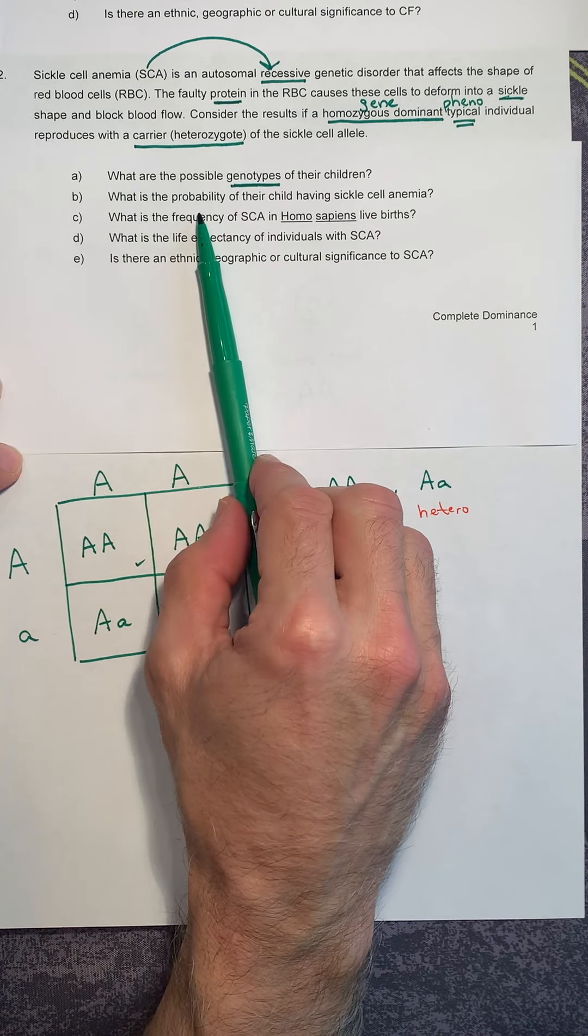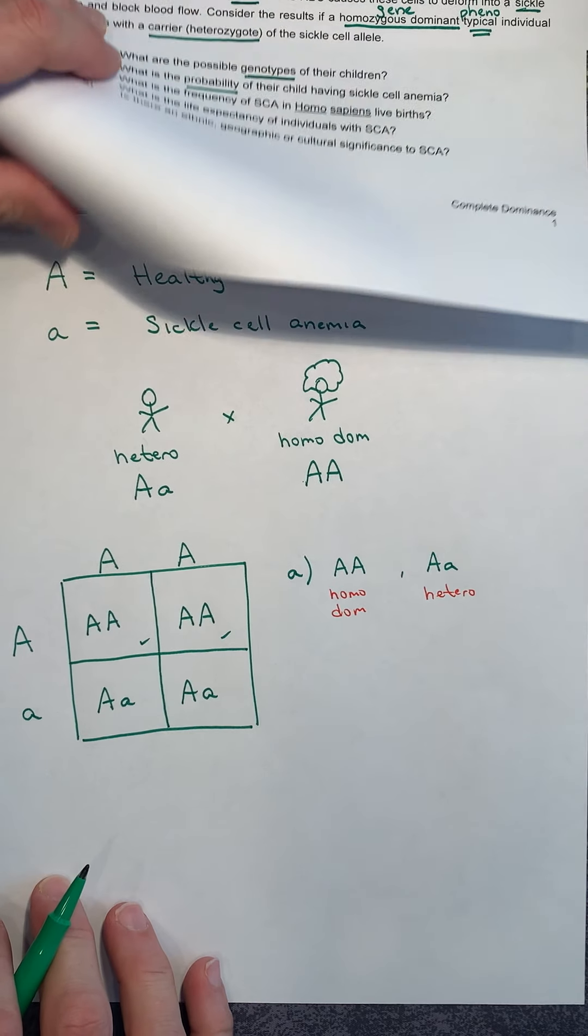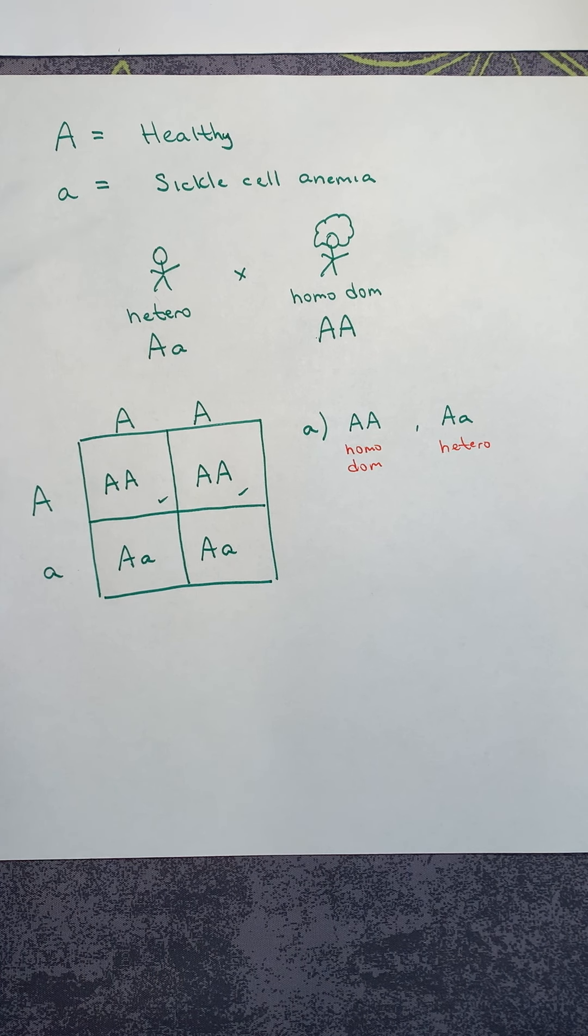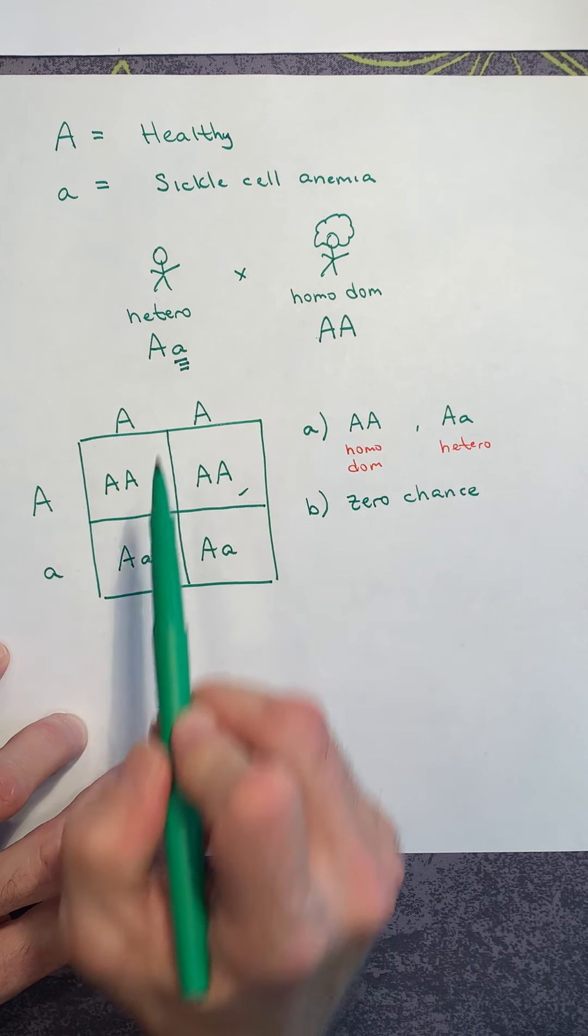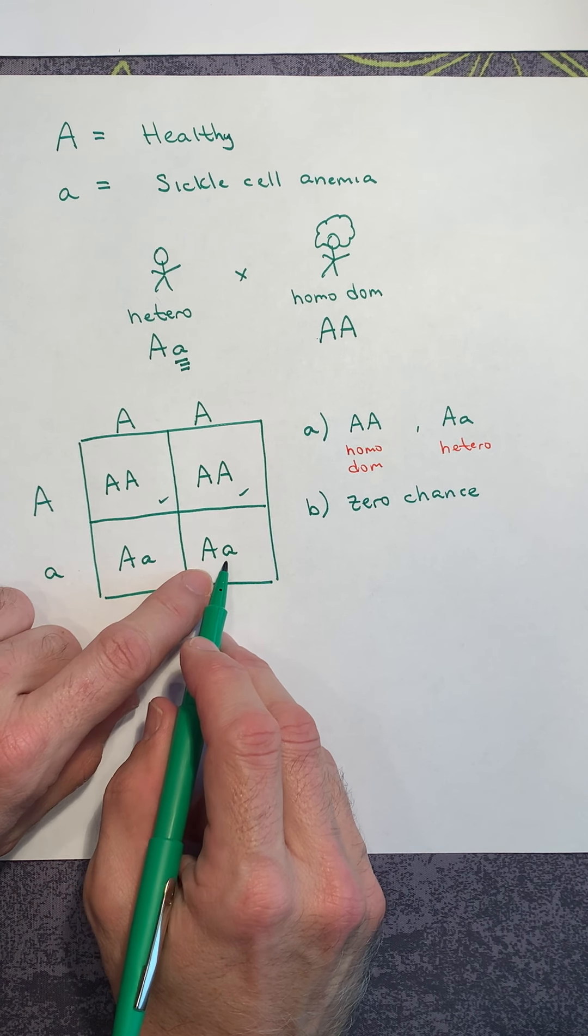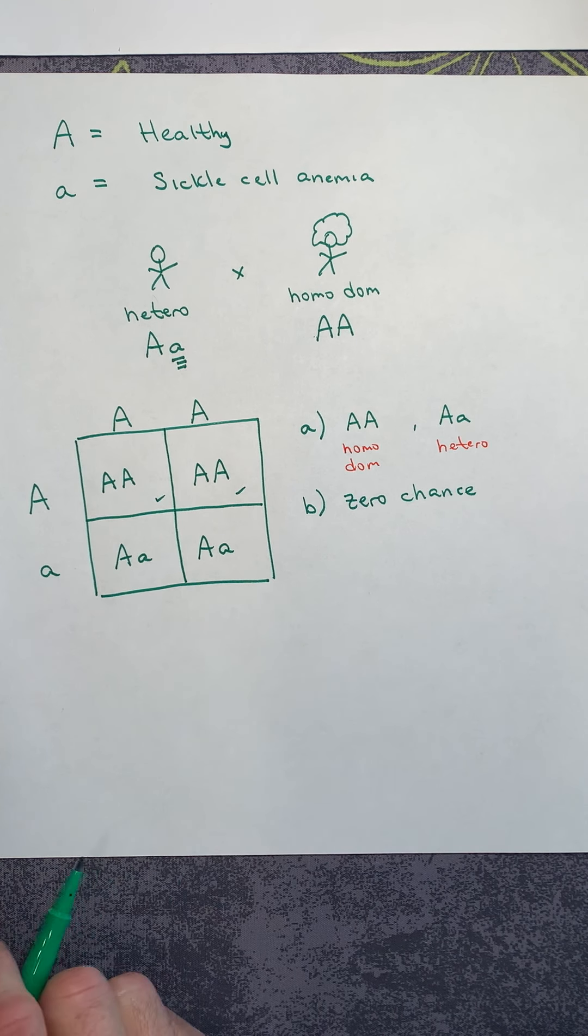Then it says B. What is the probability, what is the chance of them having a child with sickle cell anemia? Well, let's go back to our alleles here. First, in order for someone to have sickle cell anemia, they have to receive two copies of the recessive allele. Someone who is sick with sickle cell has to be little a, little a. The good news here is none of their children are little a, little a. It's physically impossible. So what is the probability of them having a child with sickle cell? Zero chance. Why? Because only he carries the sickle cell trait. Since she doesn't carry it, that means that they could give rise to a carrier. And this carrier might need some genetic counseling when they decide to reproduce. But right now, they're going to have 100% healthy children. That's excellent news.